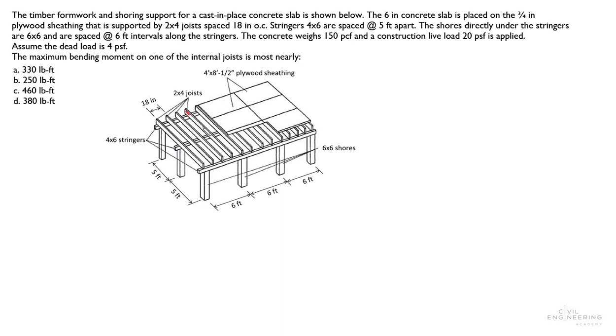So this is our joist. The first thing we need to know is what are the tributary areas on those joists. Since we already have been provided with the 18 inch on center spacing, that means this joist is going to have a tributary area width of 18 inches. The next thing we need to do is calculate our loads.